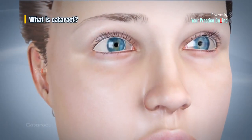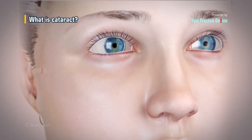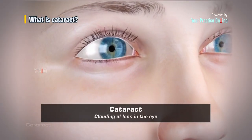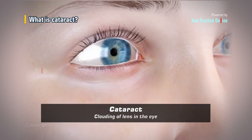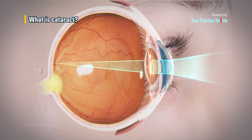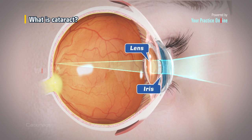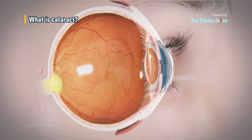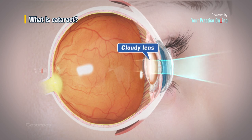A cataract is a condition which causes clouding of the lens in the eye, resulting in blurry vision. The lens is situated behind the iris, the dark portion of the eye, and is not visible. When a cataract occurs, the lens becomes cloudy and is seen as a white cloudy ball in the center of the iris.